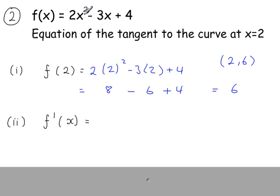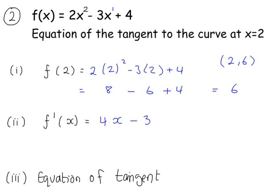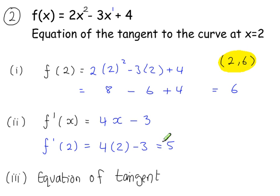For f'(x), the derivative: differentiating 2x squared gives 4x, x to the power 1 gives 1, so minus 3x differentiates to minus 3. The constant differentiates to 0 since x to the power 0 is 1, and constants vanish. So f'(x) equals 4x minus 3. Using this, the gradient when x equals 2 is f'(2) equals 4(2) minus 3 equals 8 minus 3 equals 5. So the gradient of the curve at this point is 5.